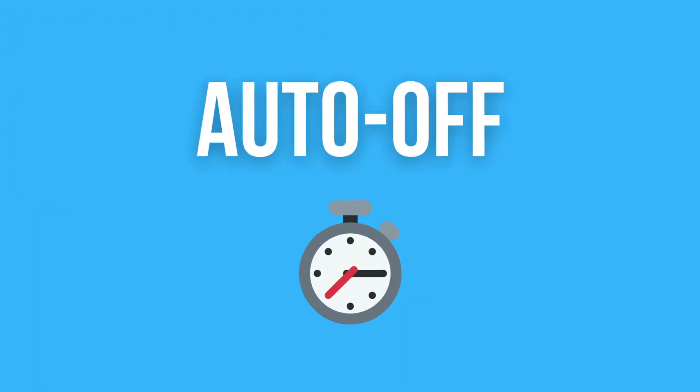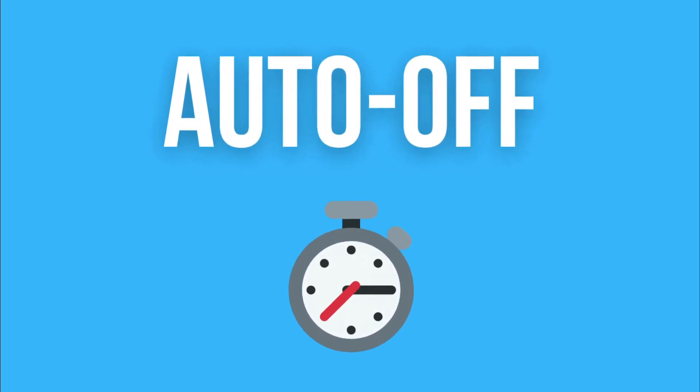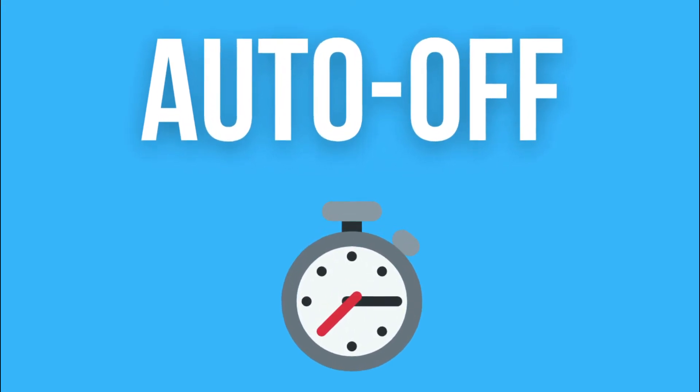Auto off is one of the best additional options a multimeter can have. It happens to everyone that sometimes we leave them on after hard work. This leads to a discharged battery. We can run out of a multimeter in situations where we need them, so the auto off is a great additional feature.